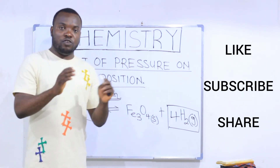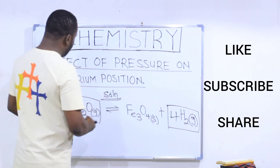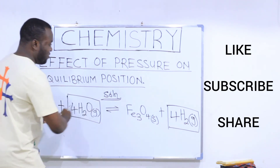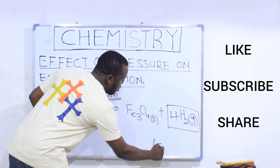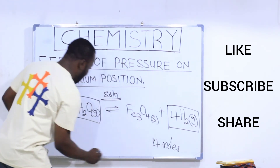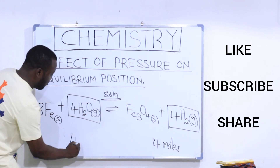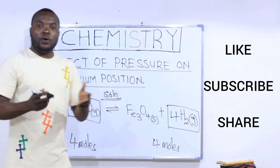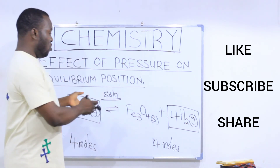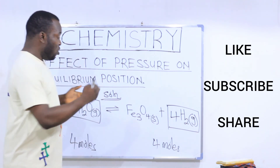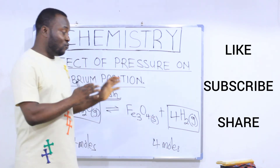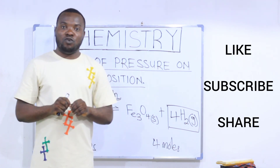When looking at the effect of pressure, check the number of moles of gases on both sides. On the right-hand side, I have four moles of gases present. On the left-hand side, I also have four moles of gases present. Since I have an equal number of moles of gases on both sides, an increase in pressure will have no effect on the equilibrium position. Equal numbers of moles of gases are present on both sides, so the answer is: there will be no effect when the pressure is increased.